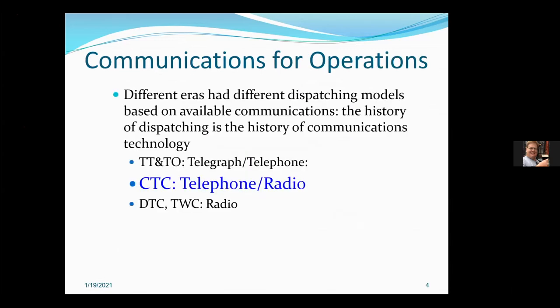You can almost think of the history of dispatching as the history of communications technology. For most of us modeling centralized traffic control, which arose in the mid-20s in response to booming traffic during the Roaring Twenties, it was telephone and then later switched to radio — about the time railroads were generally moving to radio, which was kind of the 70s. By 1986, you have the U-Core, and that's pretty much the end of timetable and train order and the beginning of DTC and track warrant control, OCS in Canada.